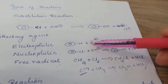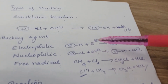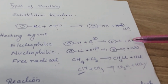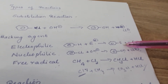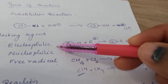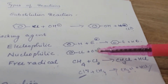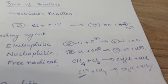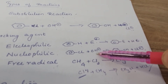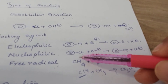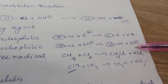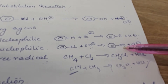An electrophile is a species which is electron deficient. In electrophilic substitution, one group replaces the hydrogen or another group at a position. A nucleophile is an electron-rich species — OH minus is a nucleophile. When chlorine moves out and OH minus attacks, that is nucleophilic substitution reaction.